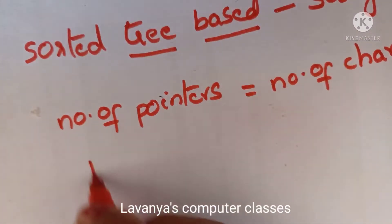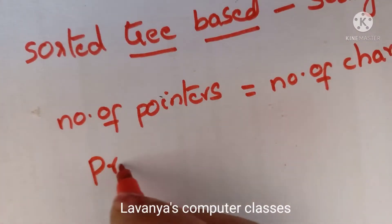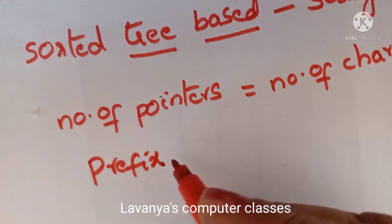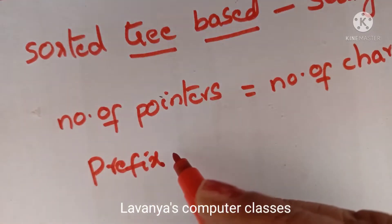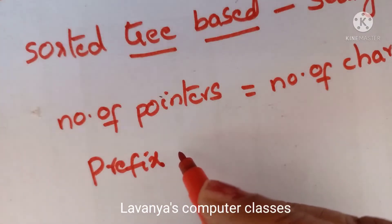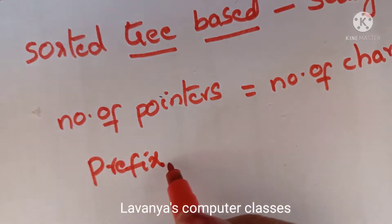Trie is also called a prefix tree. It can search a word in the dictionary with the help of the word prefix.